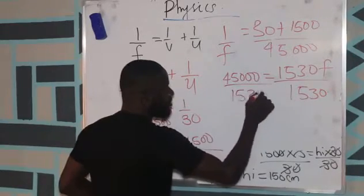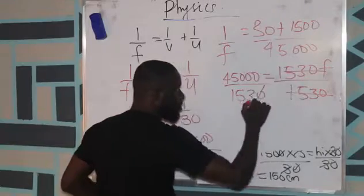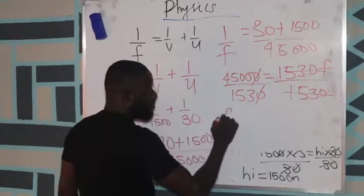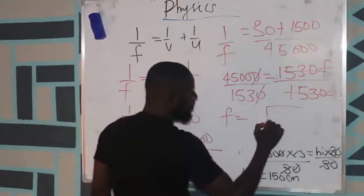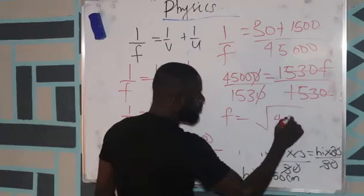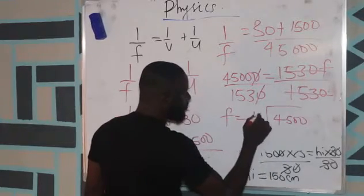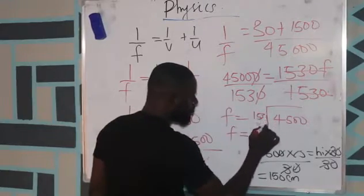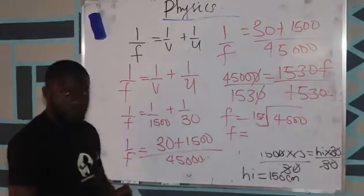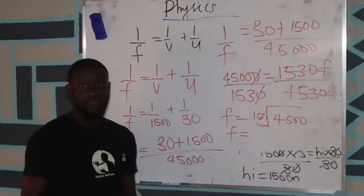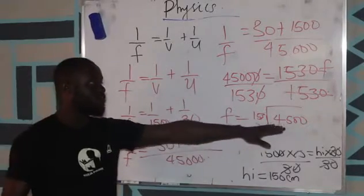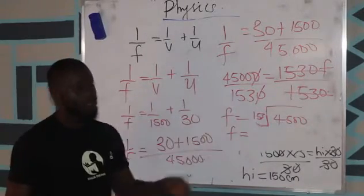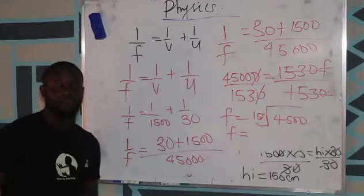This will times this, so you have f is equal to 4500 divided by 153. This will cancel this, so you have f is equal to 4500 divided by 153. The final answer, whatever you get after dividing 4500, is your focal length.